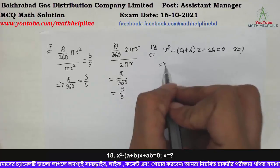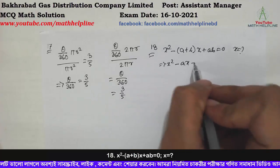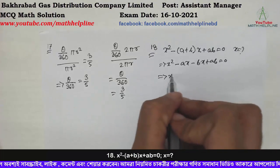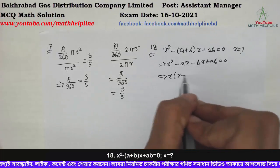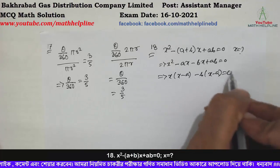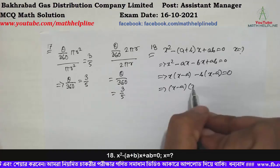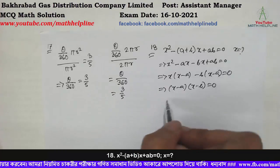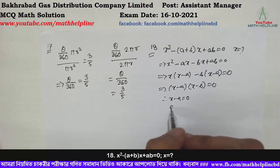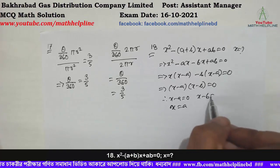x squared minus ax minus bx plus ab equals 0. Factoring: x(x minus a) minus b(x minus a) equals 0. So x minus a equals 0, meaning x equals a; and x minus b equals 0, meaning x equals b.